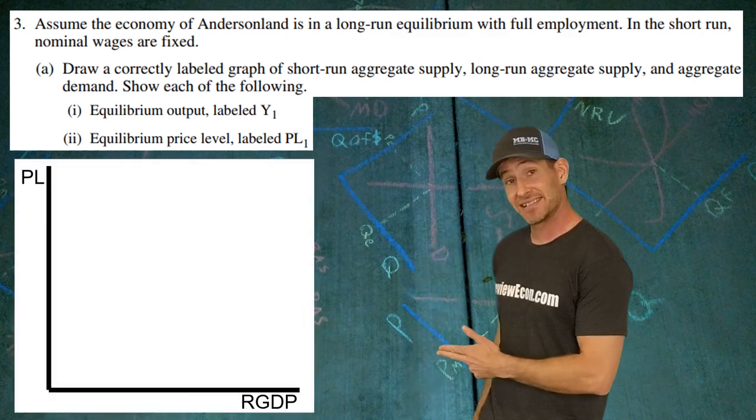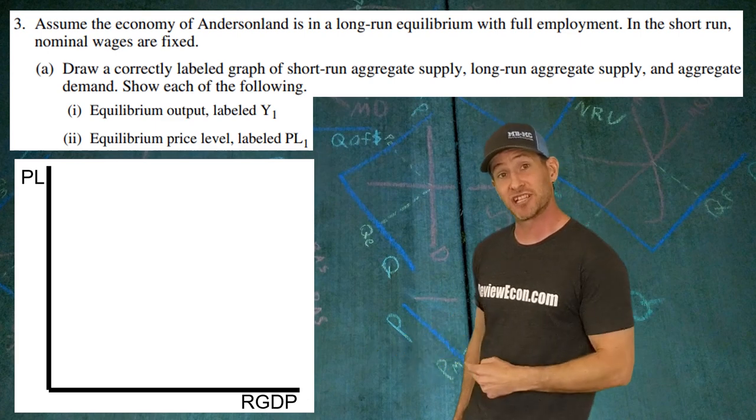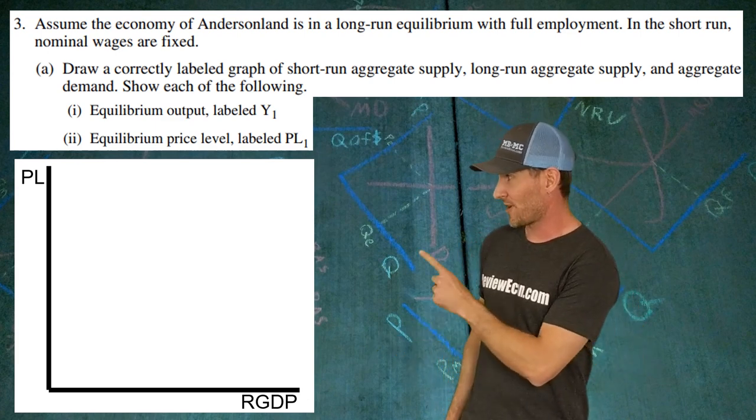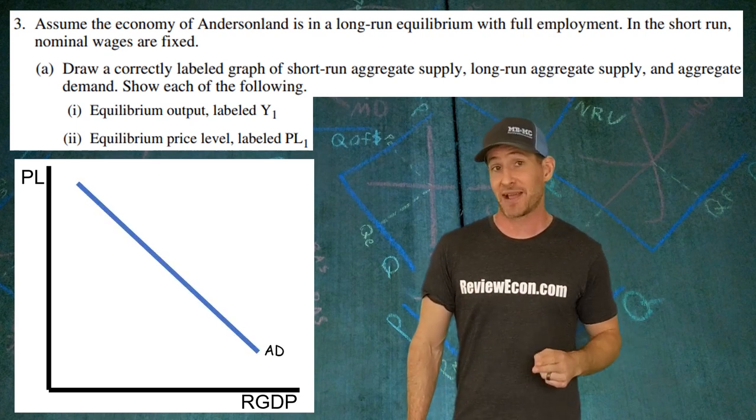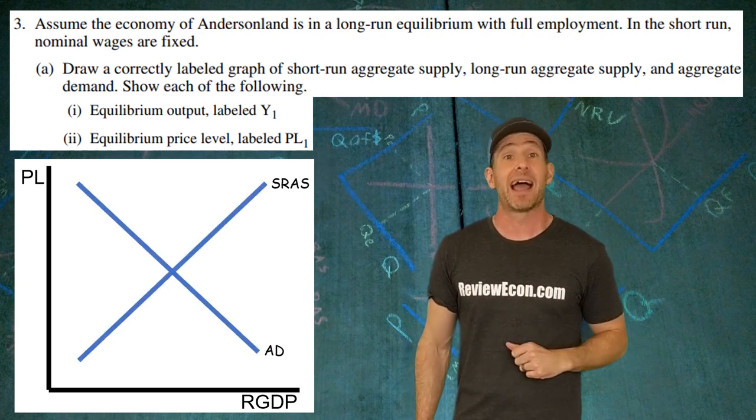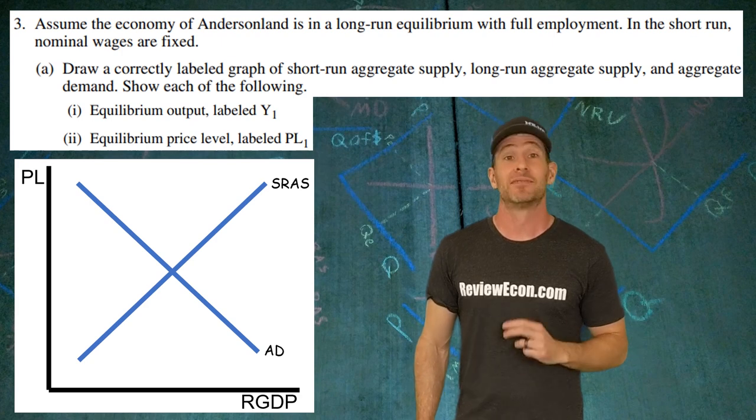Start off by having your axes labeled with real GDP on your x-axis and price level on your y-axis. Draw in a downward sloping aggregate demand curve, upward sloping aggregate supply curve, short run that is.